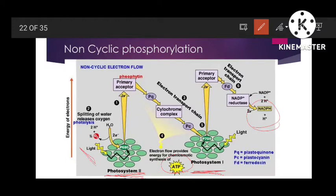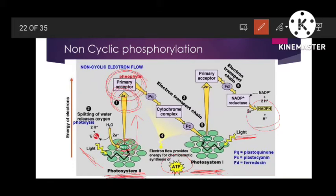Firstly, light energy including photons falls on photosystem 2. Remember, light is also falling on photosystem 1 simultaneously — we will use that point later. Focusing on photosystem 2: photons, which are energy-rich packets, excite an electron pair from the reaction center of photosystem 2, that is P680. This light energy travels through accessory pigments and finally reaches P680, where a pair of electrons is excited and accepted by the primary electron acceptor of the reaction center.